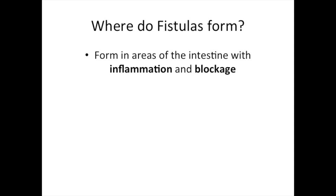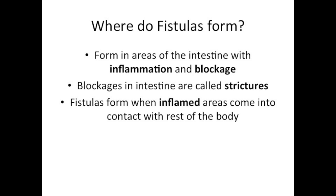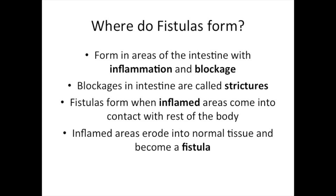Fistulas form in areas of the intestines that have a lot of inflammation and blockages. Blockages in the intestine are called strictures. In the most simple terms, fistulas form when areas of active inflammation come into contact with other areas of your body. The inflamed areas then erode into normal tissue and this becomes a fistula. Fistulas are often found with strictures.